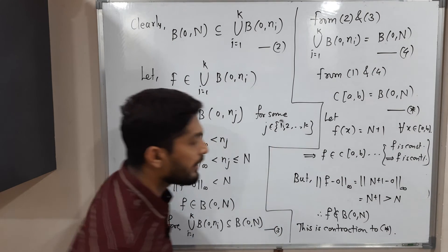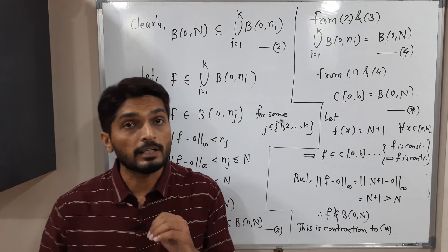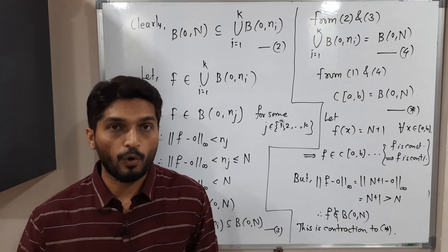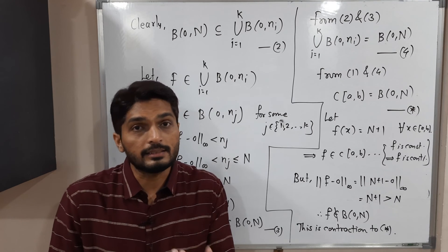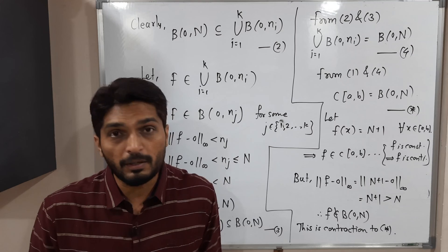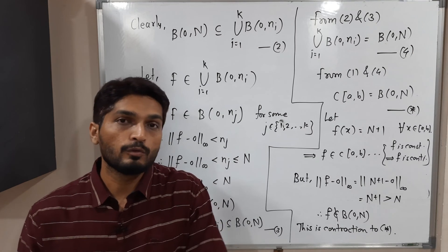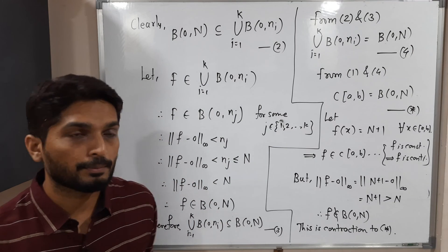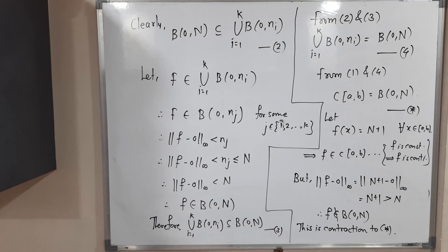Why are we getting a contradiction? Because our assumption was wrong. We assumed that script C has a finite sub-cover — that assumption is false. Therefore script C has no finite sub-cover.